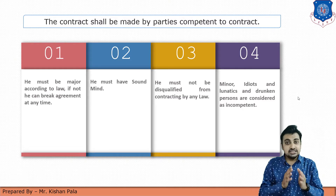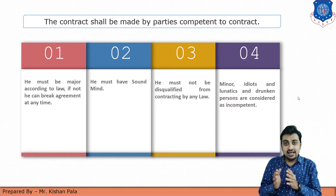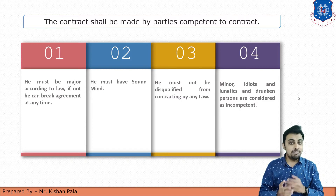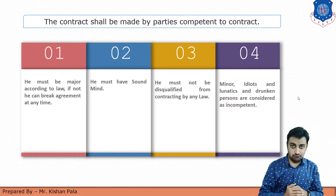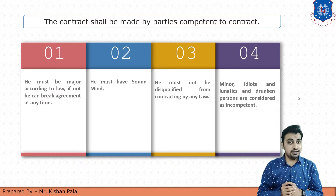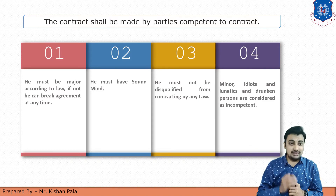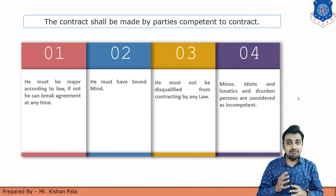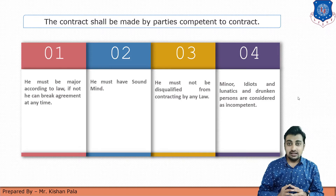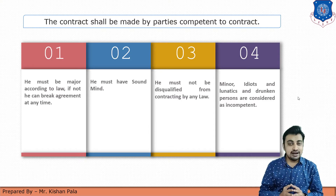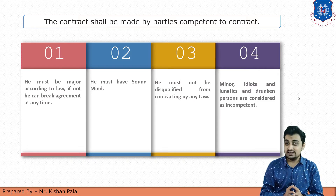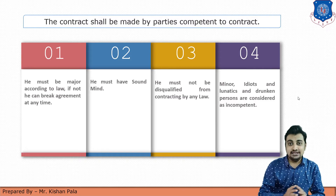If he or she is a minor — that is, their age is less than 18 years — then a valid contract shall not be made. If a person of minor age fills a tender for a particular contract, the owner can break the contract with that contractor if he or she is under 18 years of age.